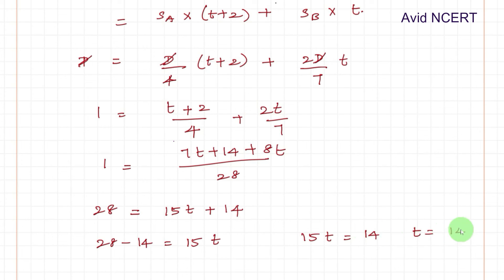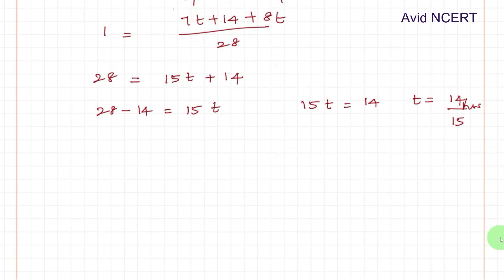Therefore 15T equals 14. Therefore T equals 14 by 15 hours. To convert this 14 by 15 hours into minutes, we multiply by 60. So 14 by 15 times 60, so 15 times 4 is 60, which equals 56 minutes.